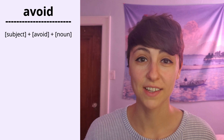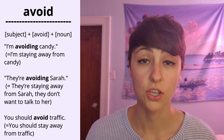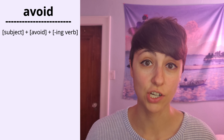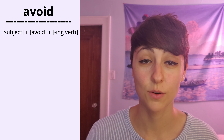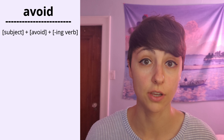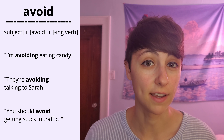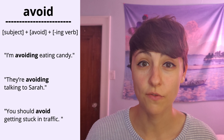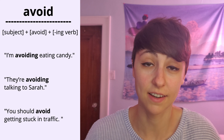Let's look at some common, simple, active sentence structures with avoid. I'm avoiding candy. They're avoiding Sarah. You should avoid traffic. We can also avoid actions — when we do this, we use the verb in its -ing form. I'm avoiding eating candy. They're avoiding talking to Sarah. You should avoid getting stuck in traffic.